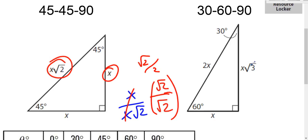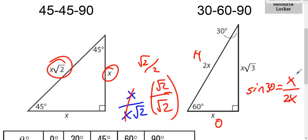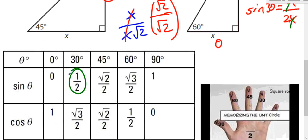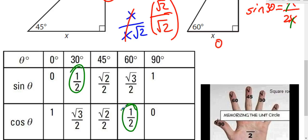You can do a similar calculation for the 30-60-90. Sine of 30 equals opposite over hypotenuse, which is x over 2x. The x's cancel, giving 1 over 2 — so sine of 30 degrees is one half. Since 30 and 60 degrees are complementary, sine of 30 equals cosine of 60. Similarly, cosine of 30 gives square root of three over two, which also equals sine of 60 because they're complementary. For 45 degrees, since 45 is complementary with itself, sine and cosine are equal.